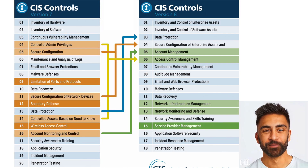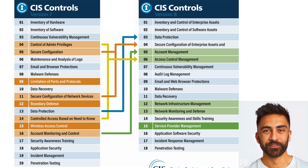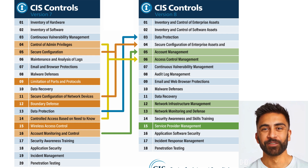CIS Controls offers 18 prioritized actions to protect against cyber threats. The Center for Internet Security, CIS, controls are a set of best practices designed to mitigate the most common cyber attacks. These controls are divided into three categories: basic, foundational, and organizational.